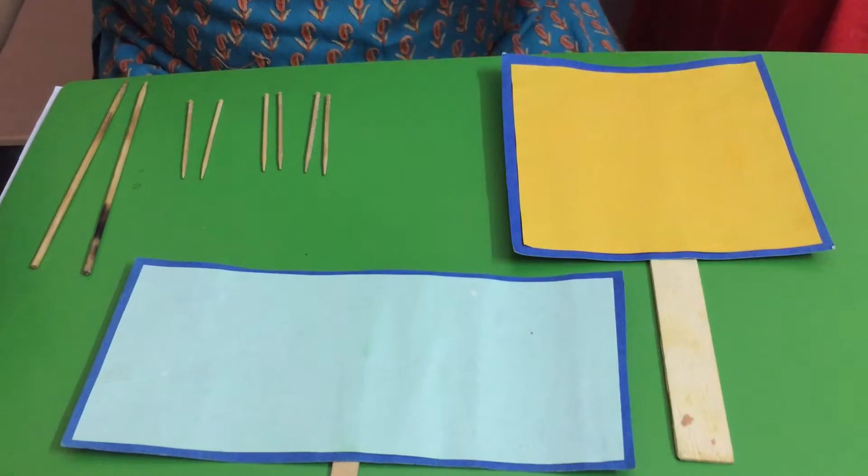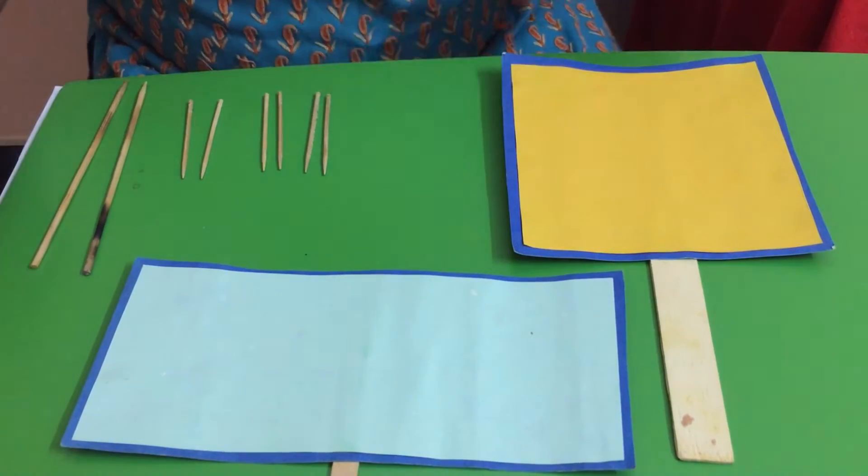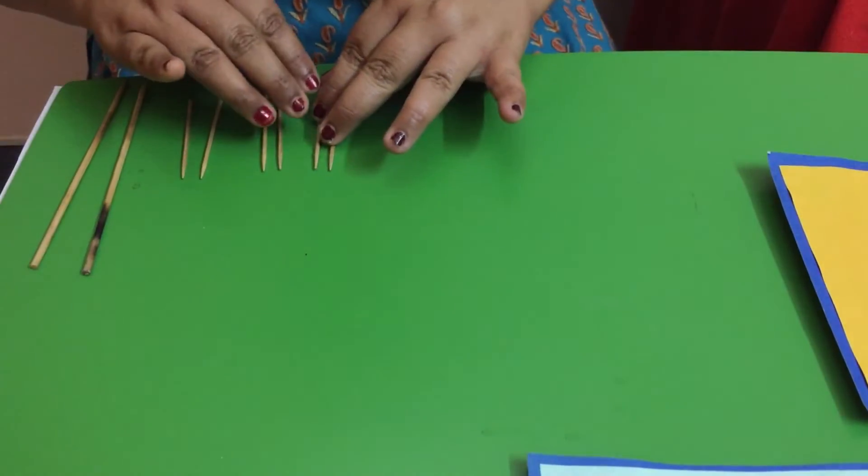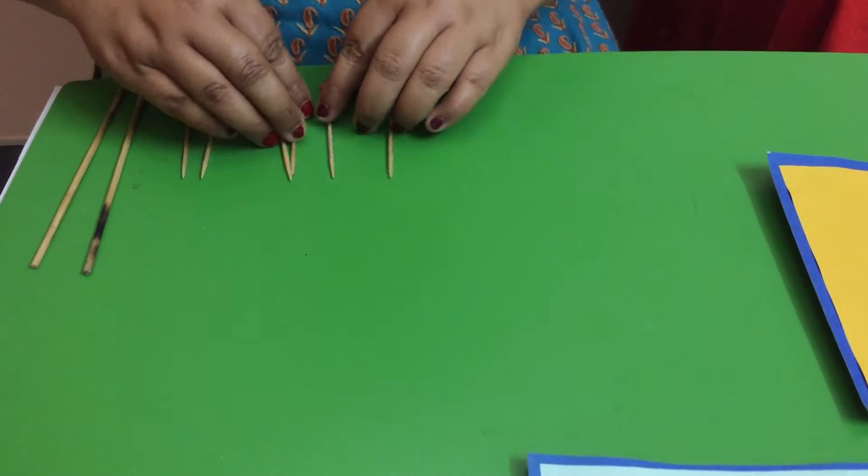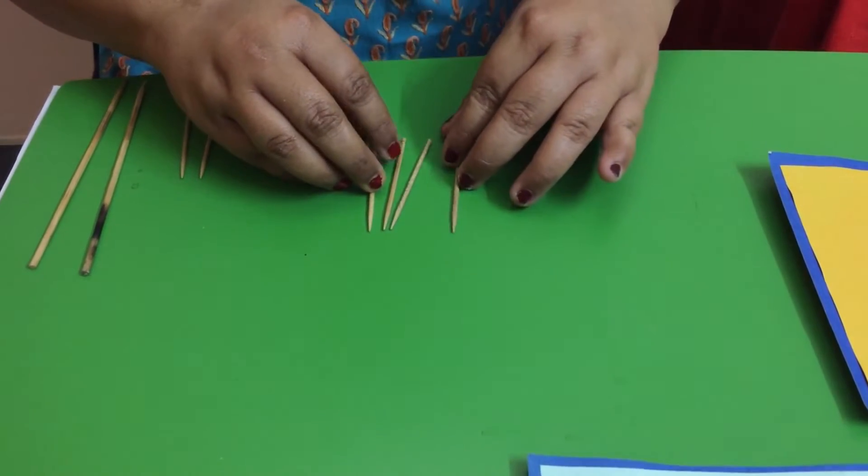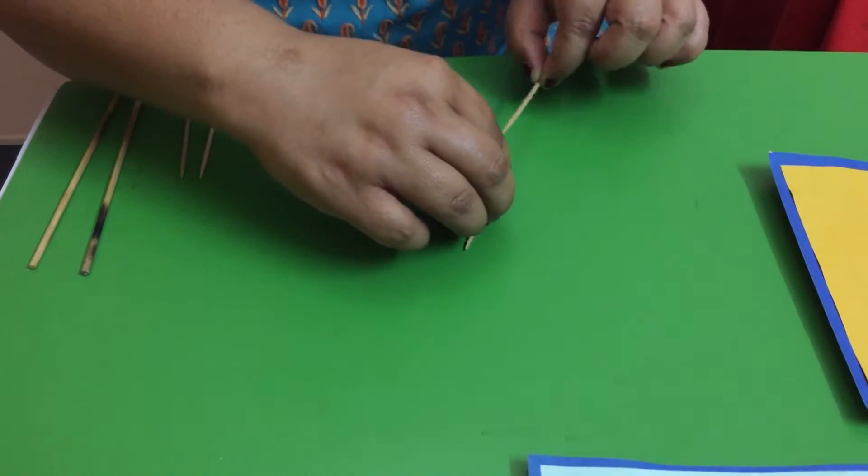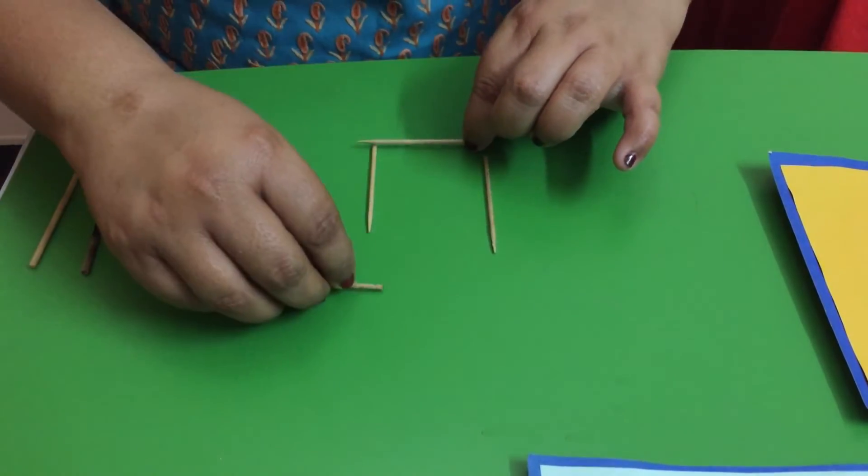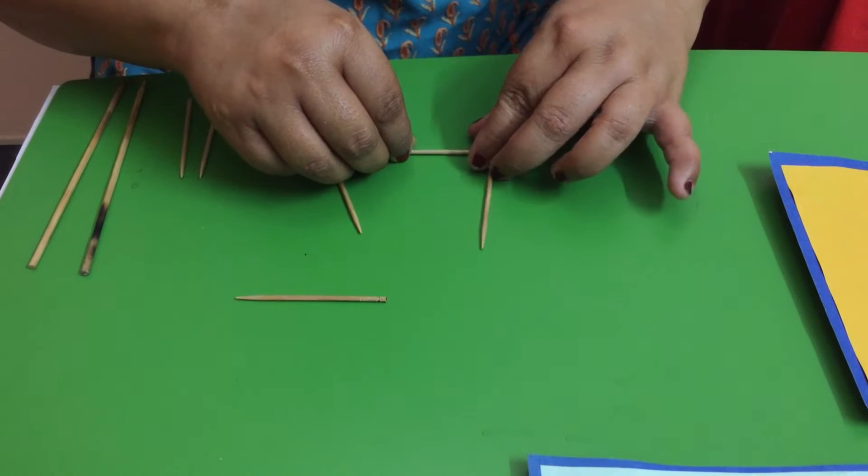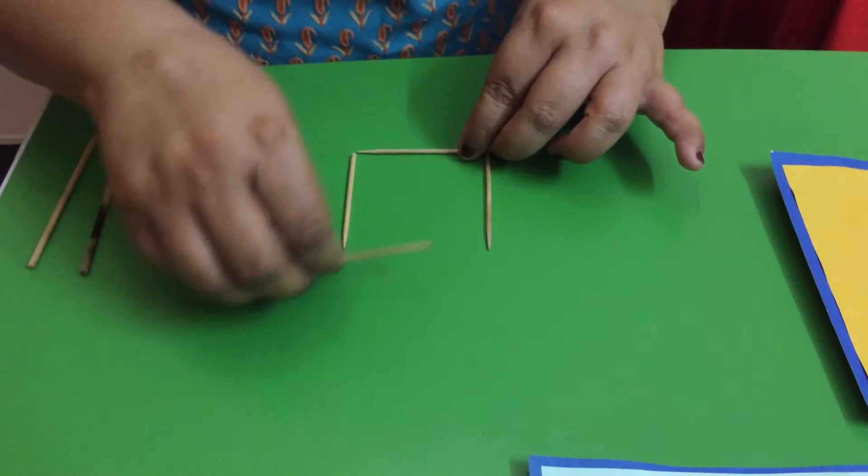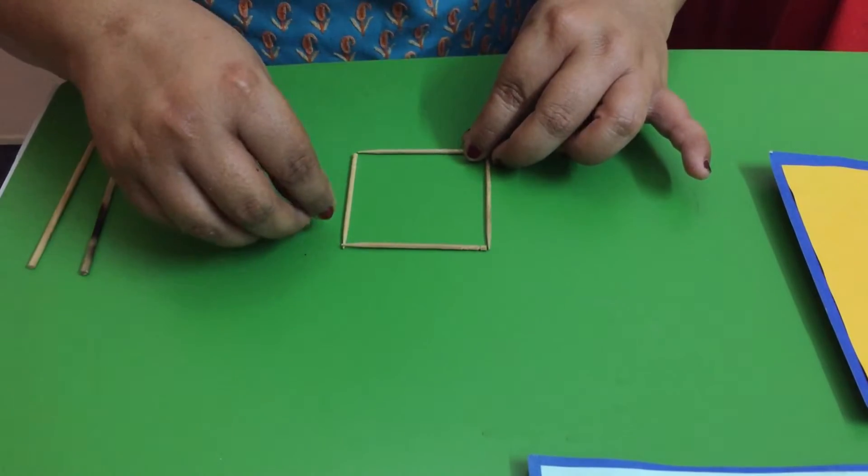Here you can see a few sticks. Now I have four sticks over here which are of same size. I am going to make square. This is one side, this is another side, this is third and the fourth side.